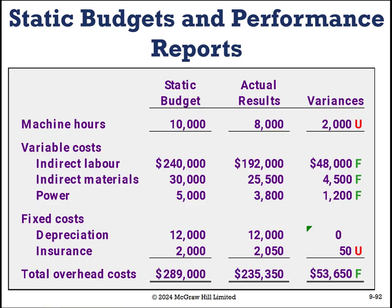Let's take a look at what a static budget looks like compared to our actual results. Our static budget said we'd have 10,000 machine hours, but we actually needed 8,000. The slides say unfavorable variance, but this is actually favorable — we're happy when we use less than we require. Similarly, when we have variable costs of 192 but budgeted for 240, that's favorable. 500 but planned for 30,000 — favorable. 3,800 versus 5,000 for power — favorable.